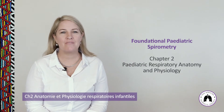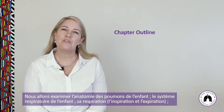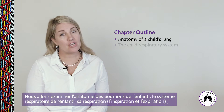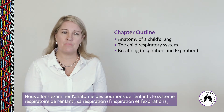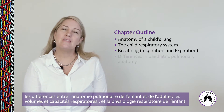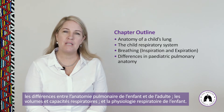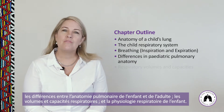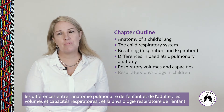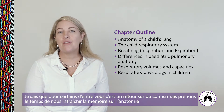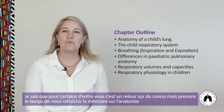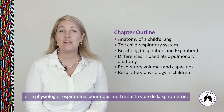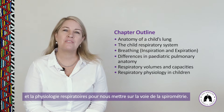Chapter 2: Pediatric respiratory anatomy and physiology. In this chapter we're going to look at the anatomy of the child's lung, the child respiratory system, the anatomy of a child's lung and breathing — that's inspiration and expiration — differences in pediatric pulmonary anatomy compared to adult pulmonary anatomy, respiratory volumes and capacities, and respiratory physiology in children. For some of you this will be a recap, but let's refresh ourselves on respiratory anatomy and physiology to orient our minds to spirometry.